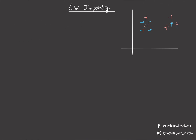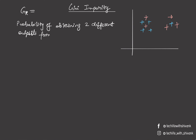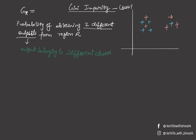Gini impurity gives us the probability of obtaining two different outputs in region R. So Gini impurity of region R is the probability of obtaining two different outputs from region R, meaning outputs belonging to two different classes. Note that Gini impurity is only used for classification problems.